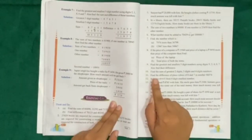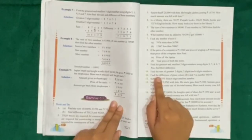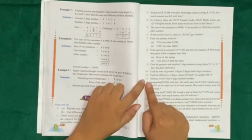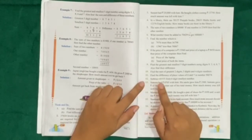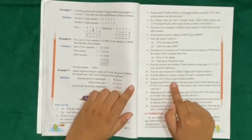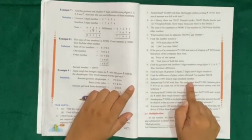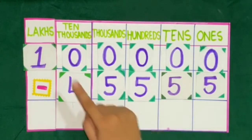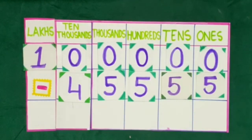We have solved question number 11. You will solve this question in your notebooks, and for homework, solve question number 12: subtract 45,555 from the 6-digit smallest number. The smallest 6-digit number is 1 lakh, so subtract 45,555 from 1 lakh. Hope you have understood the question. Thank you.